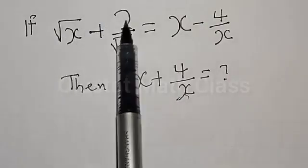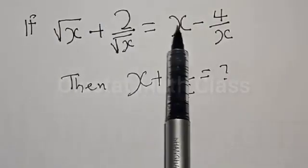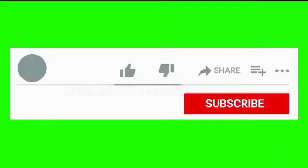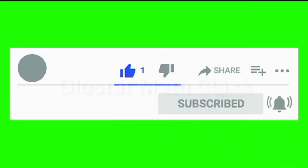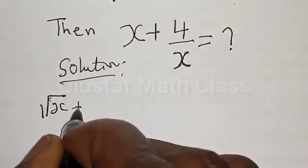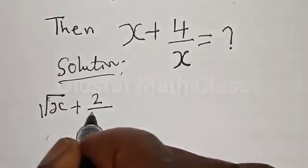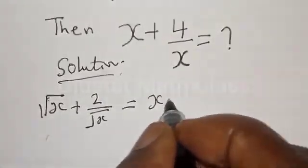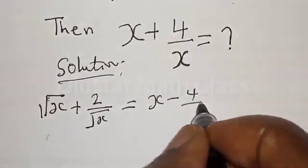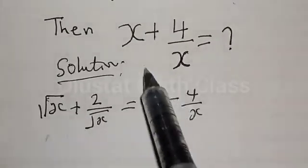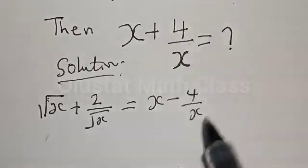Square root of s plus 2 divided by square root of s equals x minus 4 divided by x. Solution: we want to look at how we can factorize this in order to get the value of s plus 4 divided by x.